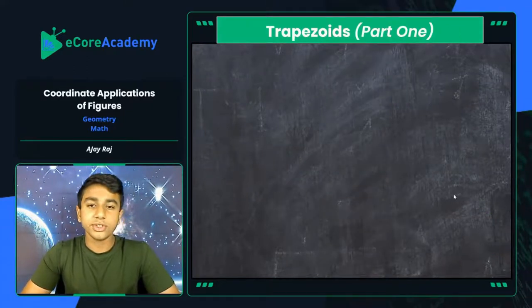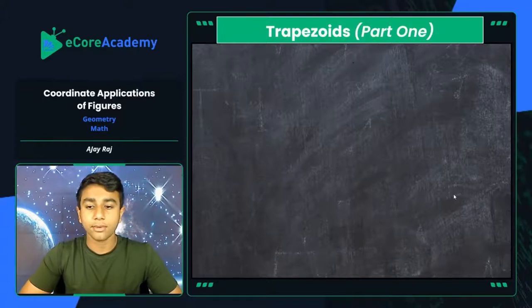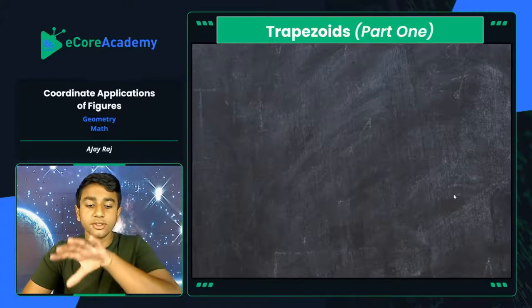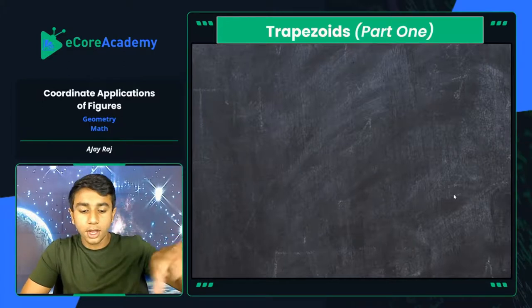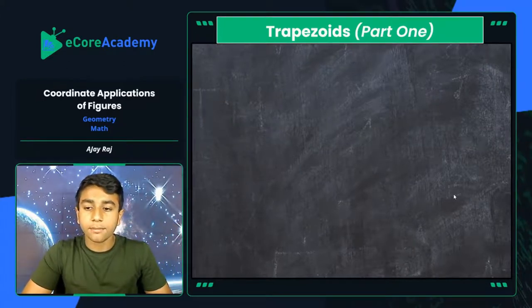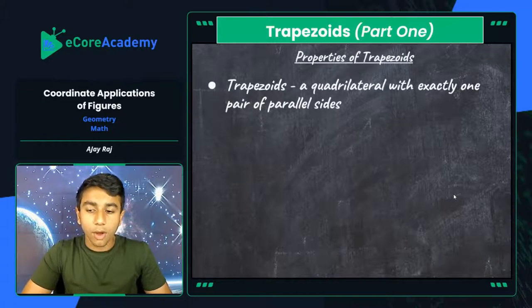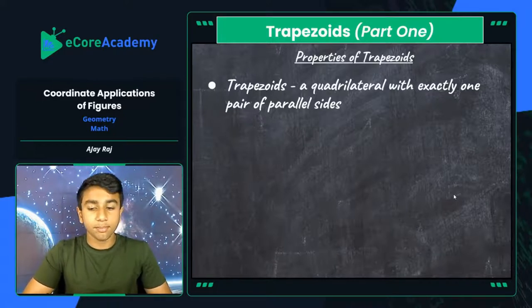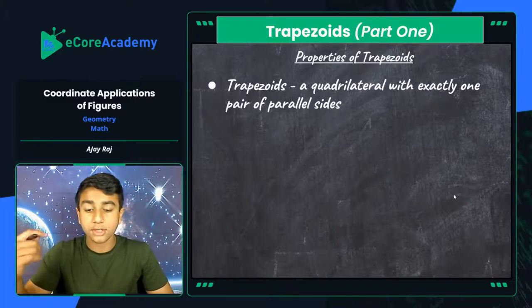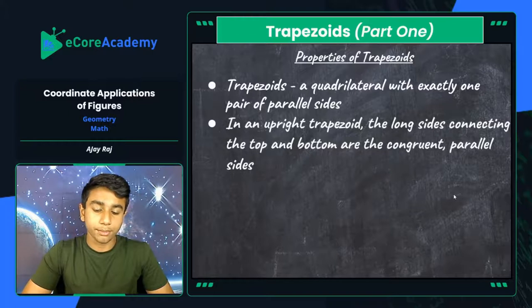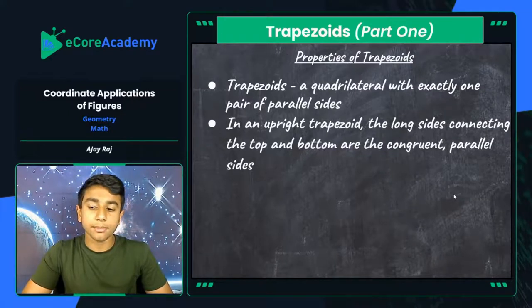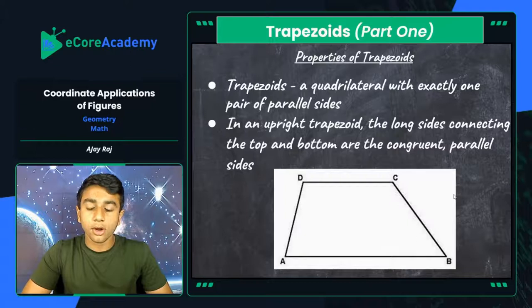Now let's look at trapezoids — the second type of quadrilateral classification. We've recapped rectangles, squares, rhombuses, and parallelograms. Trapezoids are very unique and displaced from the rest of our quadrilaterals. A trapezoid is a quadrilateral with exactly one pair of parallel sides. In an upright trapezoid, the long sides connecting the top and bottom are the congruent parallel sides — side DC is congruent to side AB.